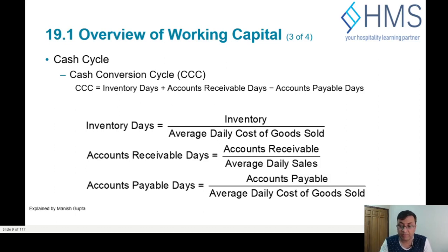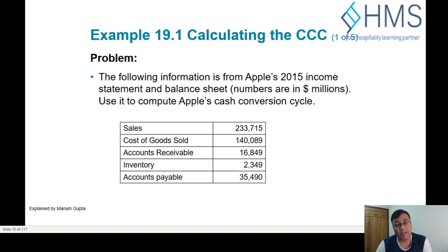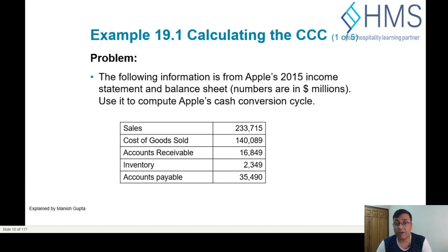Let us look at an example using Apple's 2015 data to explain the cash conversion cycle. All figures are in millions of dollars: sales were $233 million, cost of goods sold was $140 million, accounts receivable was $16 million, inventory was $2 million, and accounts payable was $35 million. Our task is to calculate Apple's cash conversion cycle.